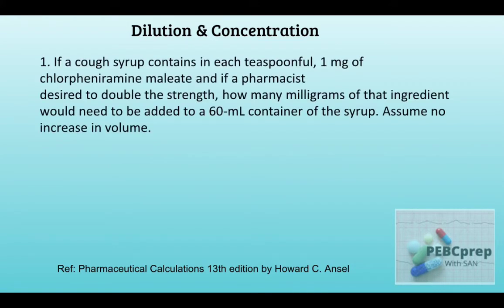If a cough syrup contains in each teaspoonful one milligram of chlorpheniramine maleate, and if a pharmacist desired to double the strength, how many milligrams of that ingredient would need to be added to a 60 milliliter container of the syrup?